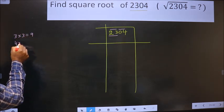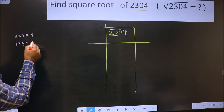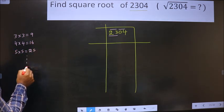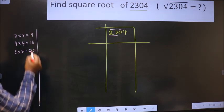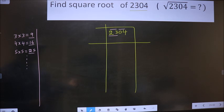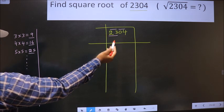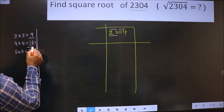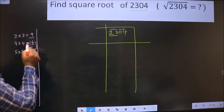4 into 4, 16, 5 into 5, 25 and so on. These numbers are called perfect squares. Here we have 23. 23 lies between these 2 numbers. So we take the smaller number that is 16.